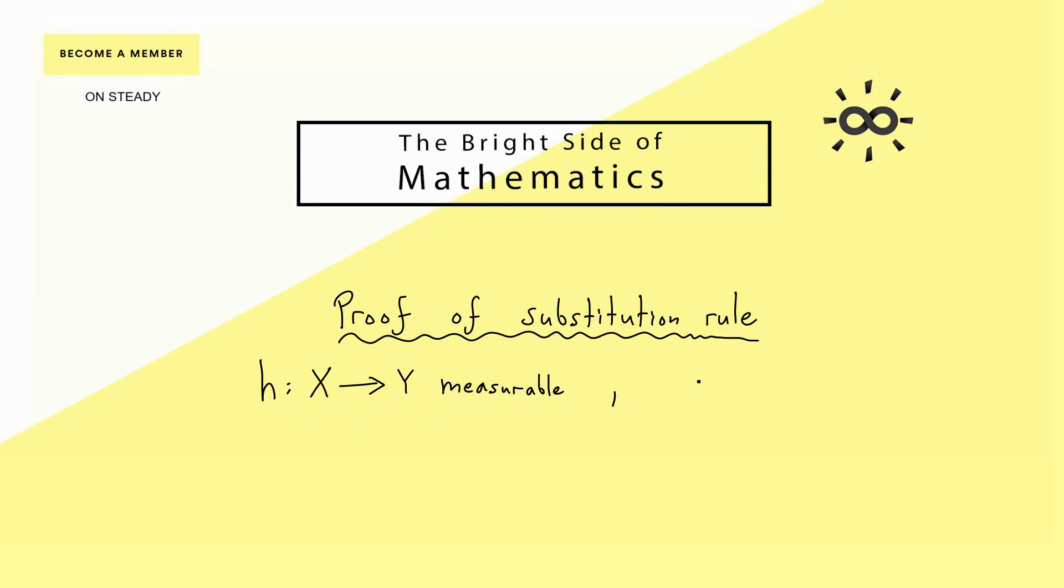With this, we have considered a measurable function defined on Y and called g, with values in R, which should also be integrable with respect to our image measure here. And with this, we have the following substitution formula.